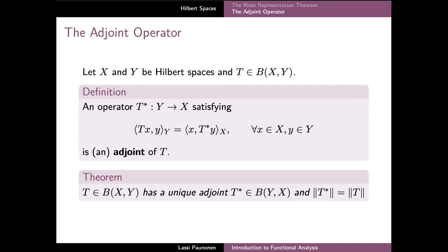This is indeed possible since on the previous slide we saw that at least one such operator exists. What follows is that the adjoint operator turns out to be unique, and it is also a linear and bounded operator from Y to X. Finally, as a nice additional property, the operator norms of T and the adjoint are the same.